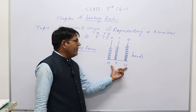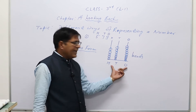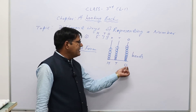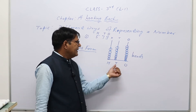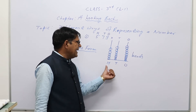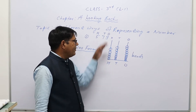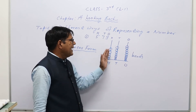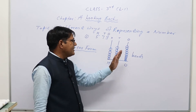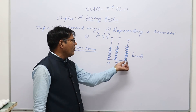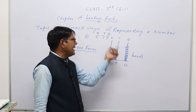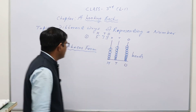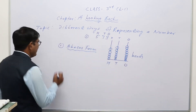To represent any given number in abacus form, first make the strips for ones, tens, and hundreds, and then in each strip make the beads as per the corresponding digit. This is the first form.